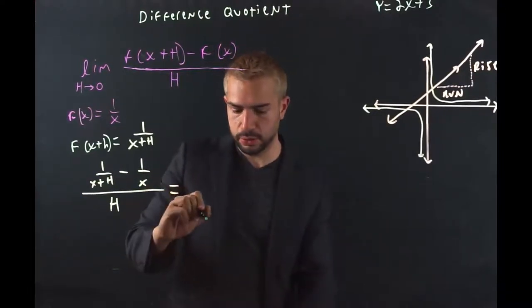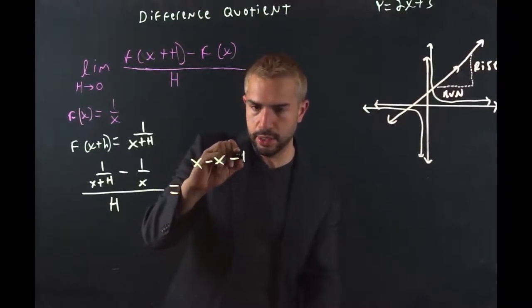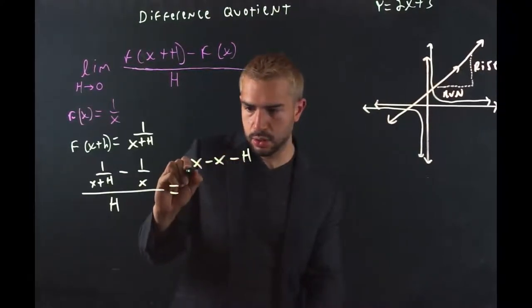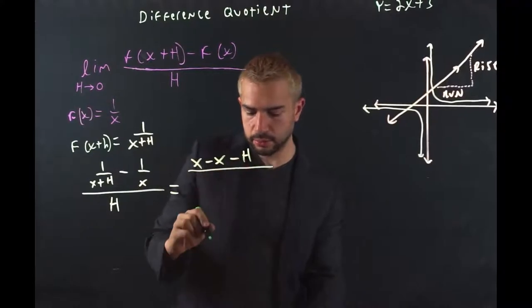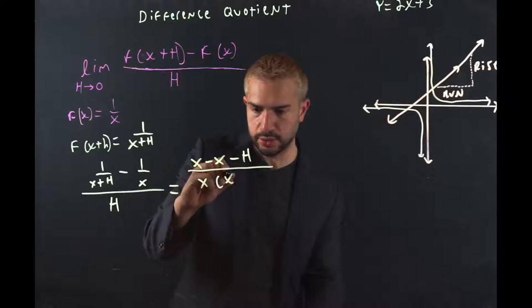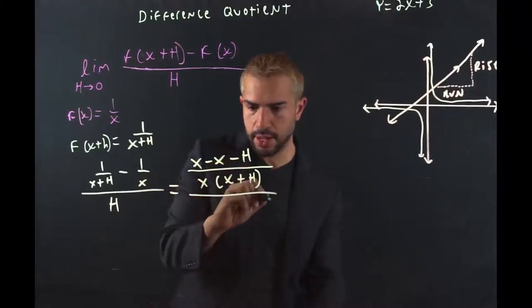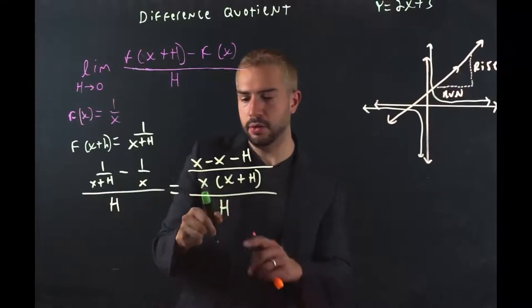so that equals x minus x minus h divided by the LCD, which we said was x times (x + h). All that divided by our original h.